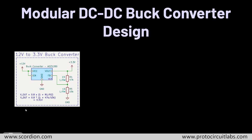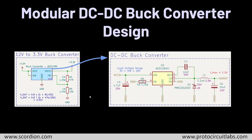Here is an example of the buck converter module I'm going to show you. We have a hierarchical sheet and hierarchical labels to connect the internal circuit to the outside. I also moved the internal feedback resistors outside so we can easily change them from outside the module. With this module we can make different inputs and outputs with different resistor values. Here is also a formula for calculating the output voltage, and here is the internal circuit of this hierarchical module.